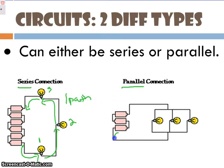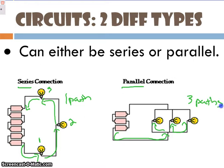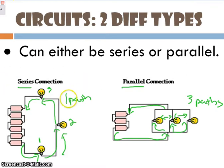Whereas if we go over here, all of a sudden my path branches. My electrons can go here, they can go this way, or they can go this way — these are three separate paths. It's because these light bulbs are parallel to one another, while the other light bulbs go in series — back to back to back. In series circuits, electrons have one path. In parallel circuits, electrons have multiple pathways — specifically three in this picture.